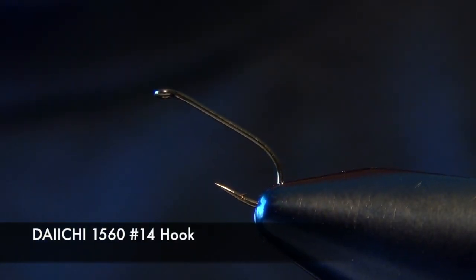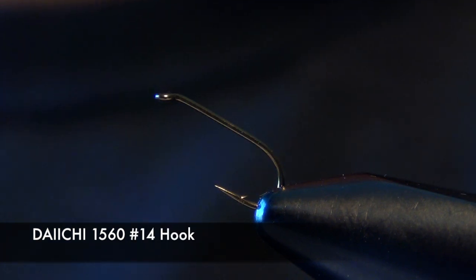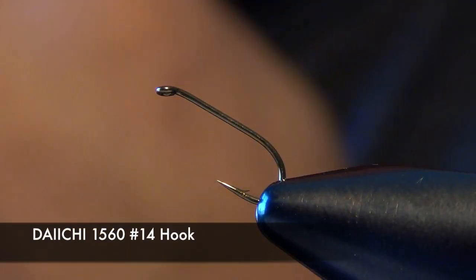In today's video we're going to tie a fly called the Tron Micro Stone. This is a variation of my Tron Emerger but it is a micro-sized stonefly nymph.